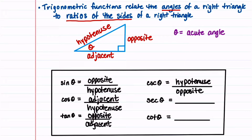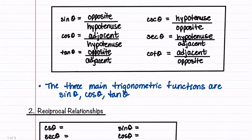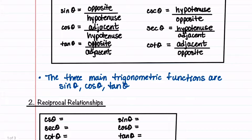Our secant function is the hypotenuse divided by the adjacent side. The three main trigonometric functions that we'll work with are sine, cosine, and tangent.